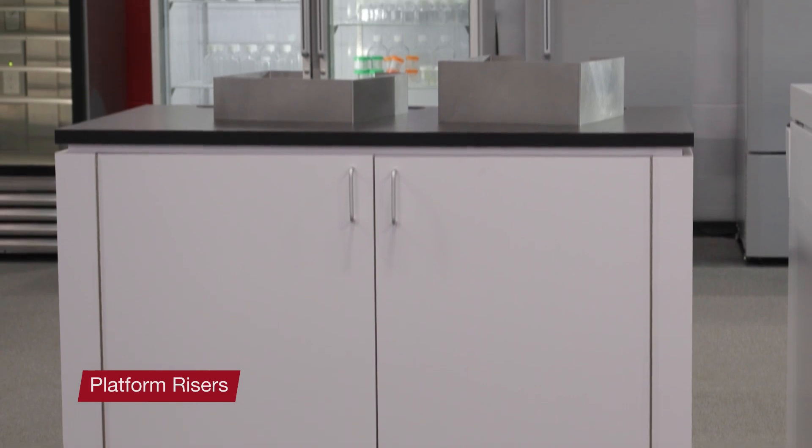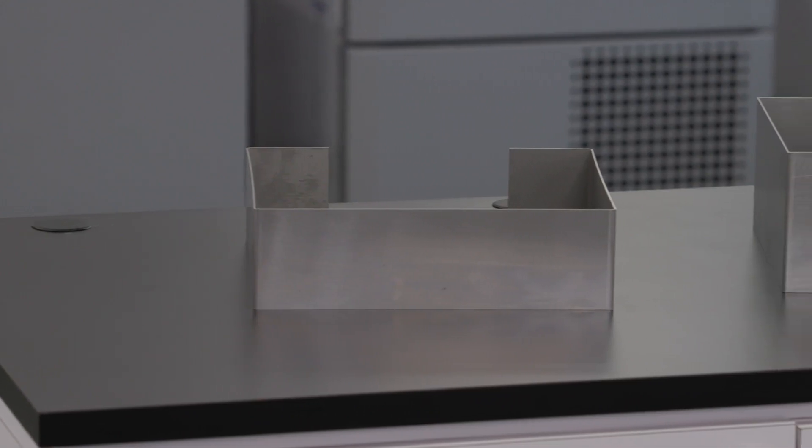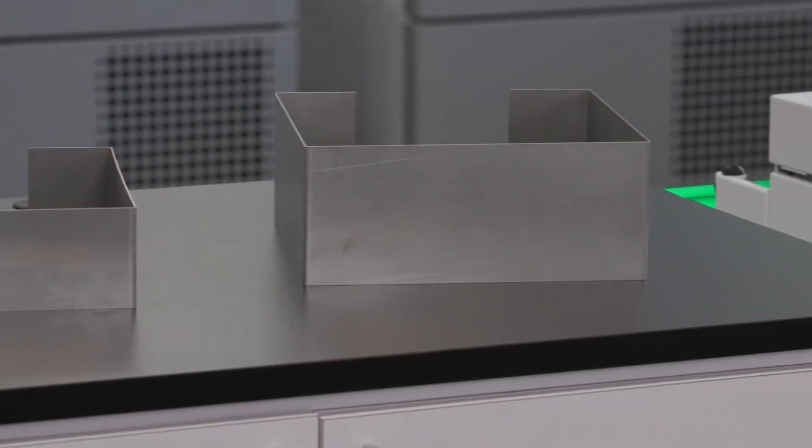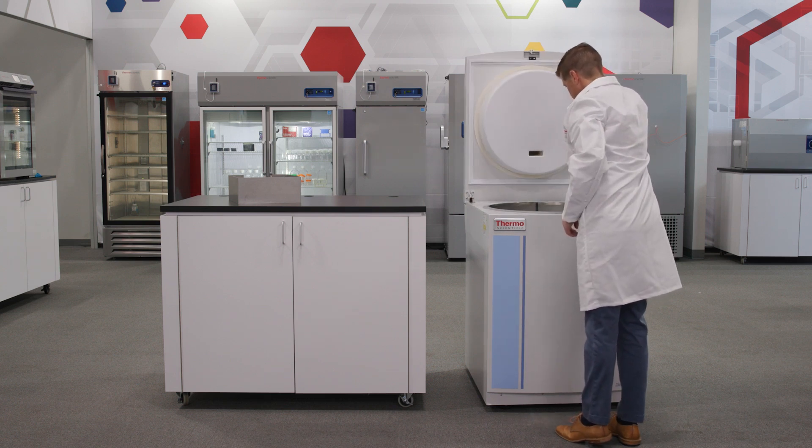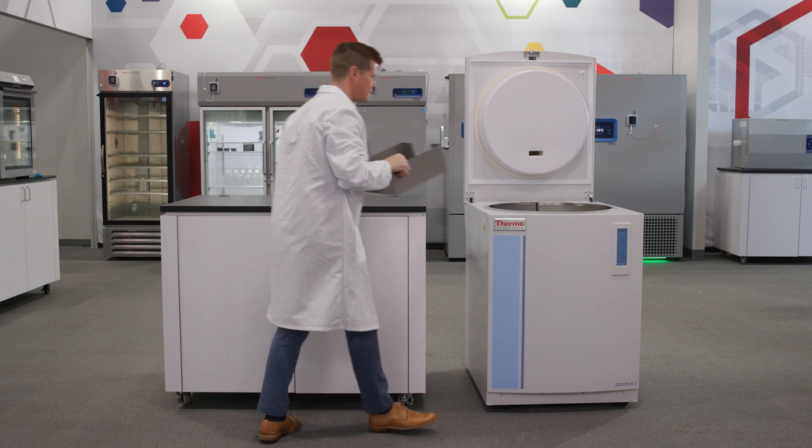If you plan on storing your samples in vapor phase, you'll want to consider getting a platform riser to ensure your racks and samples are held above the liquid nitrogen level. Platform risers are available in convenient three and a half, four, and five inch heights depending on your preferred liquid nitrogen levels.